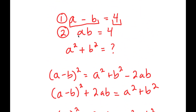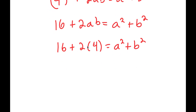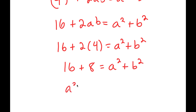From here, we're given that a times b is equal to 4, meaning 16 plus 2 times 4 is equal to a squared plus b squared. Now 2 times 4 is 8, so I get 16 plus 8 is equal to a squared plus b squared, meaning a squared plus b squared is equal to 16 plus 8, which is 24.